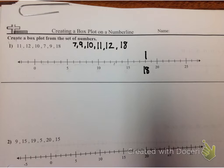My next step is I'm going to put on my maximum and my minimum. So my maximum, as I can see, is 18. My minimum is 7, so I'm going to go ahead and put that on.